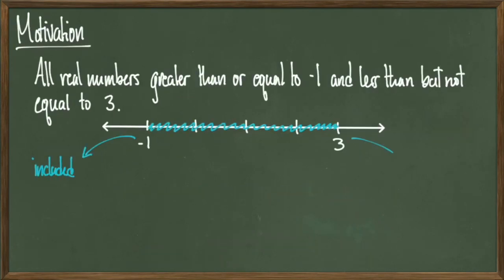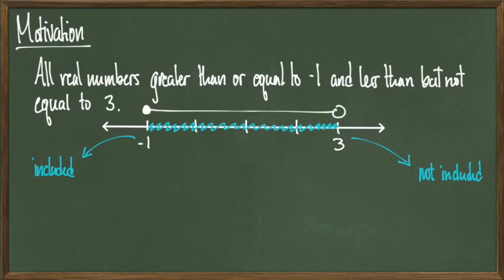I'm going to pull up the same statement and the same picture from the previous slide and demonstrate the proper way to write what I'm talking about and how to draw it on a number line. The proper way to encode our number line is with a straight line above the segment of numbers we're talking about, draw a shaded-in circle above negative 1, and an open circle above 3. This is certainly easier and quicker than drawing arrows and writing whether or not a value is included, and it's consistent.